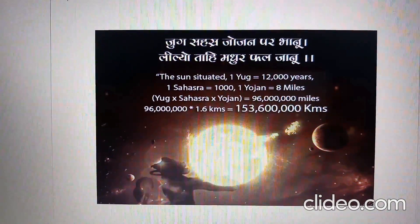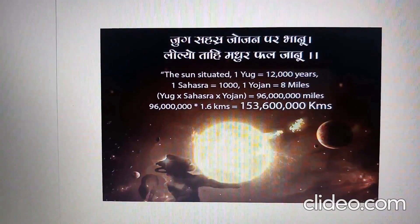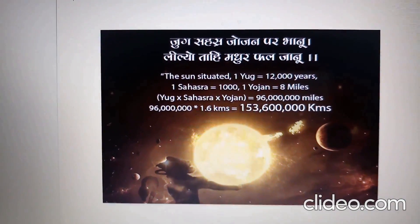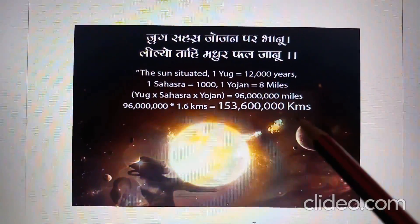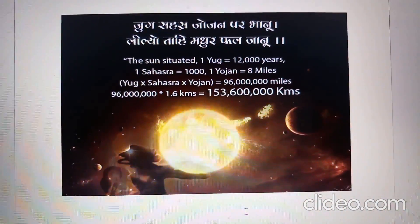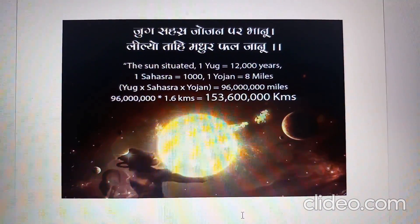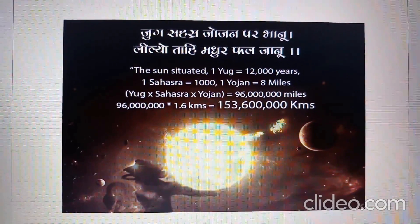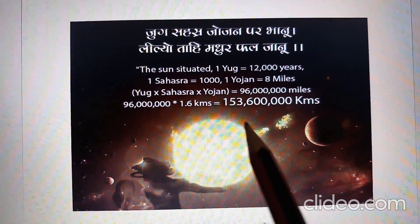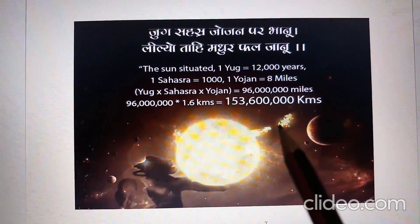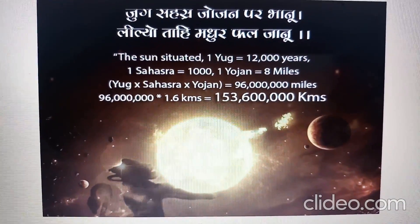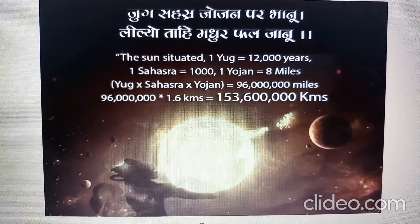In the Hanuman Chalisa written in the 16th century, Tulsidas gave a very close estimation of the distance between the Sun and the Earth. We have one yoke equal to 12,000 miles, one sahasra equal to 1,000, one yojan equal to 8 miles. When we multiply all these, we get 96,000,000 miles. One mile equals 1.6 kilometers, therefore 96,000,000 miles equals 153,600,000 kilometers. Scientists proved that the distance Tulsidas calculated is the same when converted into kilometers.